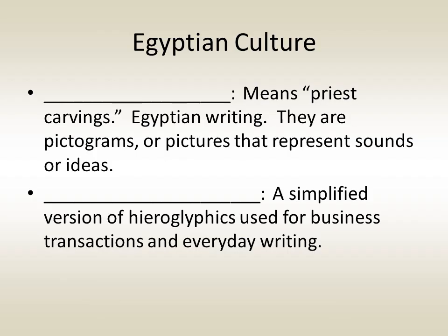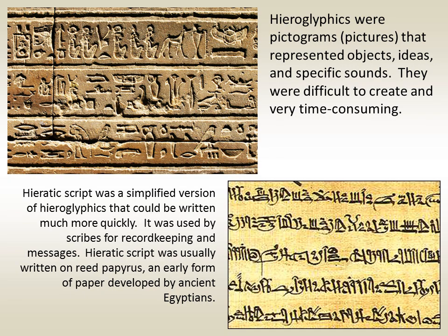The Egyptians developed their own writing system called hieroglyphics, meaning priest carvings. They are pictograms — pictures that represent sounds and ideas — that are very difficult to write and time-consuming. So Egyptians also developed hieratic script, a simplified version of hieroglyphics used for business transactions and everyday writing. Hieratic script was much simpler, could be written much more quickly, and was usually written on reed papyrus, an early form of paper developed by the ancient Egyptians.